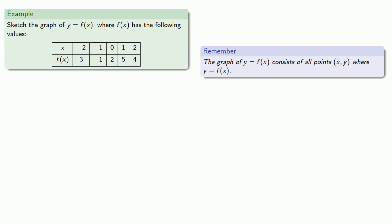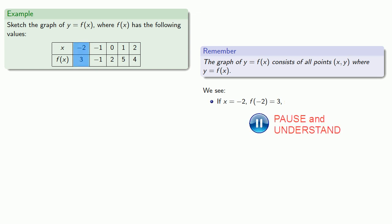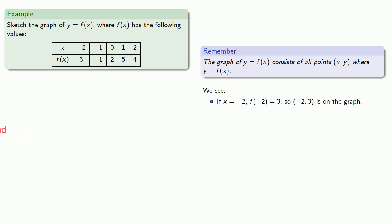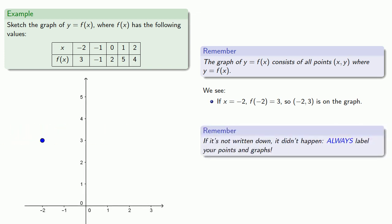So if we look at our table, we see that if x equals negative 2, f of negative 2 is equal to 3. So the point negative 2, 3 is on the graph, so we can graph it. Remember, if it's not written down, it didn't happen — always label your points and graphs.